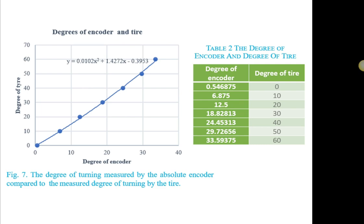By using this method, the degree of the tire and the degree of the absolute encoder can be obtained and controlled. So, the result of the degrees is illustrated in figure 7, which is followed by table 2.